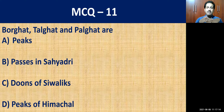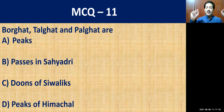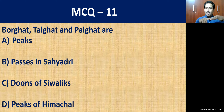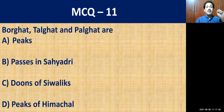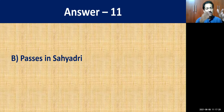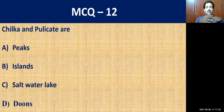MCQ question number eleven: Borghat, Thalghat, and Palghat — what are these? Whether they are peaks, passes, dunes, or peaks? They are passes in the Sahyadri, that is passes in the Western Ghats.